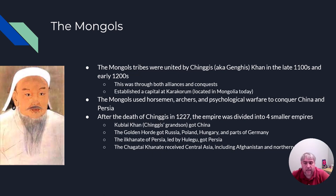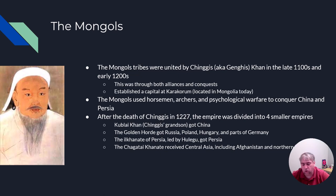Whenever the Mongols attacked somebody, they would offer the enemy the opportunity to surrender and pay money. If they accepted, they were spared but had to support the Mongol army with manpower and supplies. If they refused, they were completely destroyed. The Mongols would let a few civilians escape so they could tell others about the death and destruction — this psychological warfare preceded them and helped them conquer large swaths of territory.